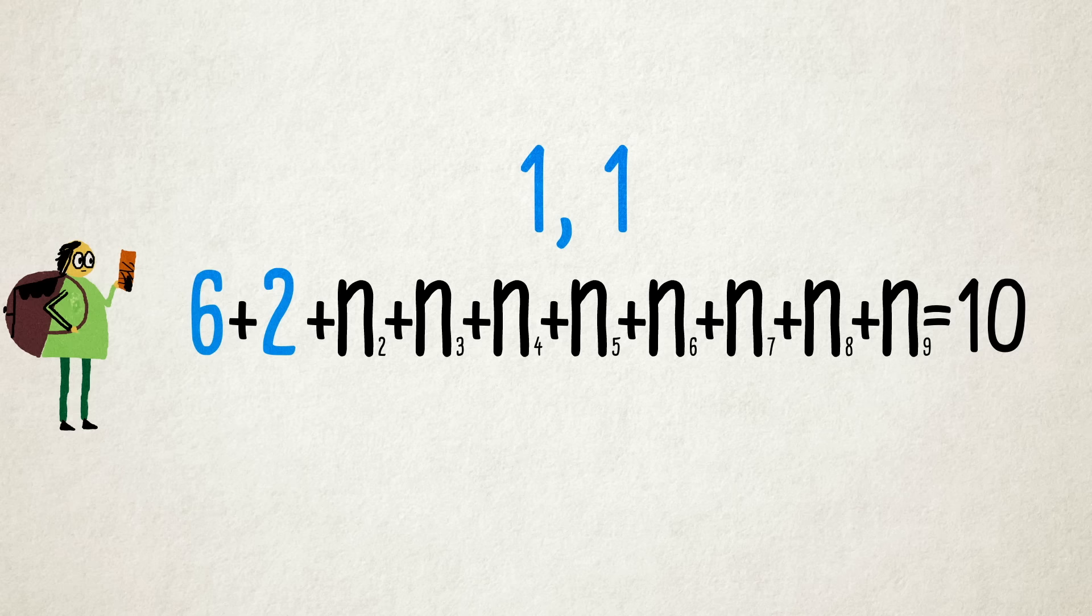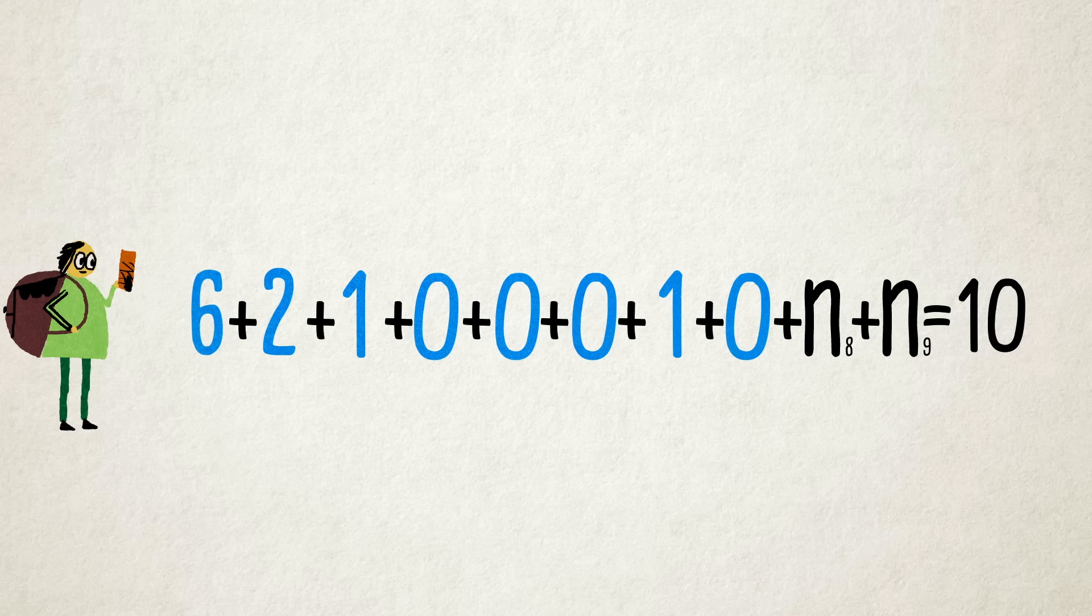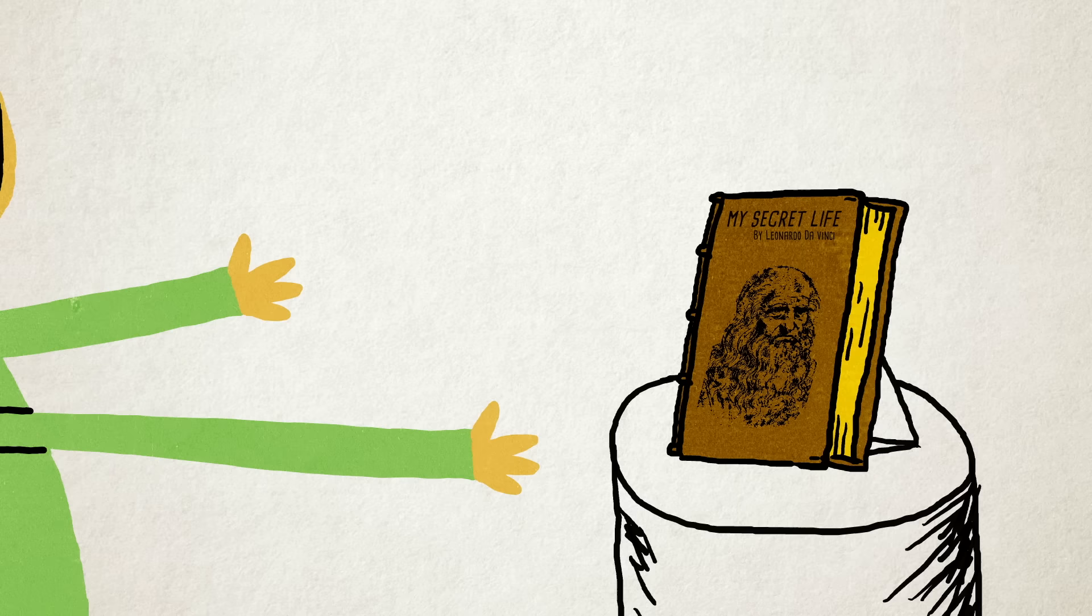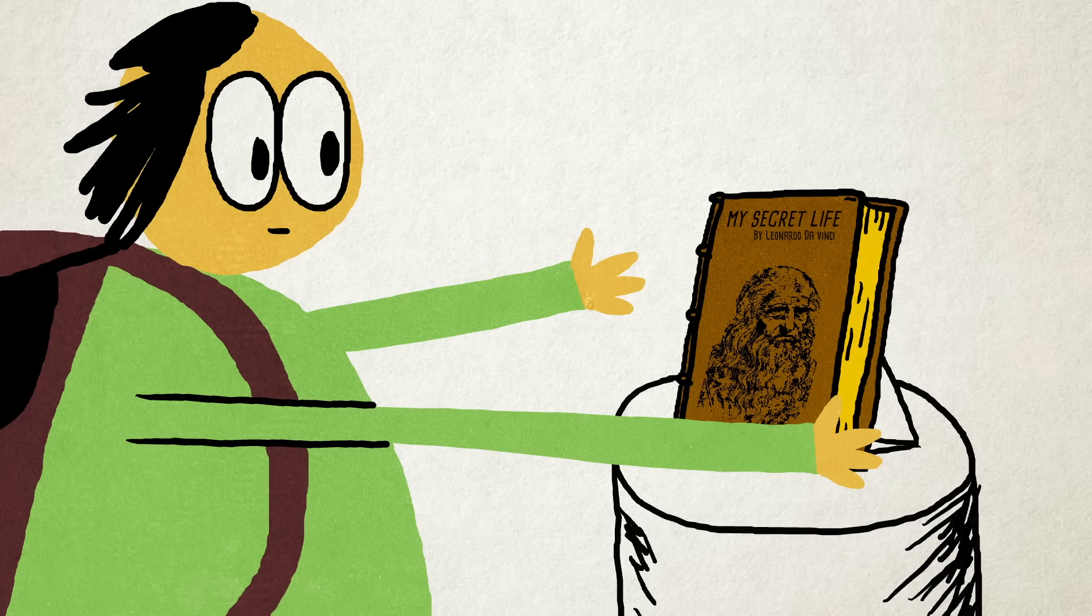Six zeros, two ones, one two, zero threes, zero fours, zero fives, one six, zero sevens, zero eights, and zero nines. The safe swings open, and inside you find da Vinci's long-lost autobiography. For today's bonus riddle, here's what we'd like you to do.